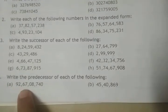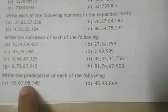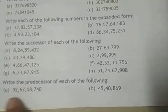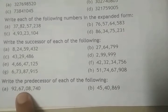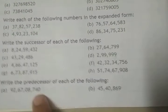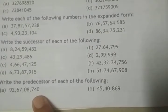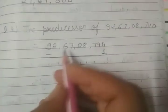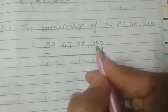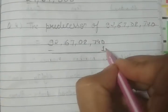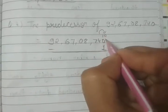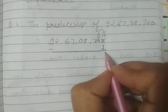First is 92,67,08,740. We subtract 1 from the number. 0 minus 1, but 0 is less than 1, so we take carry 1 from 4. 10 minus 1 is 9.